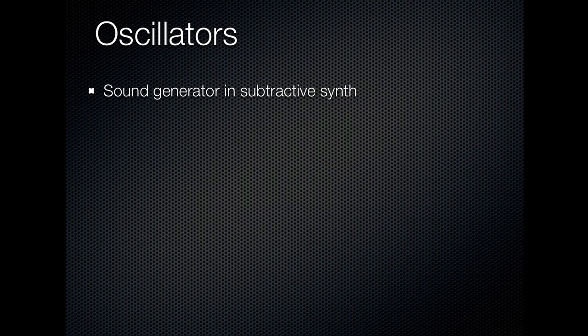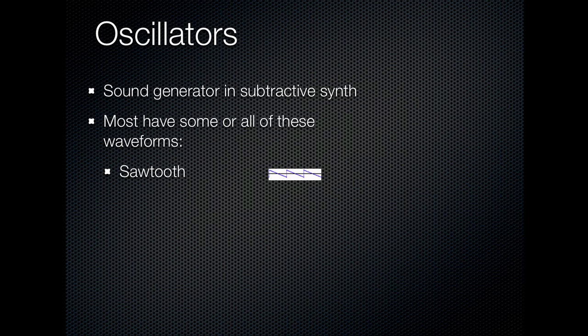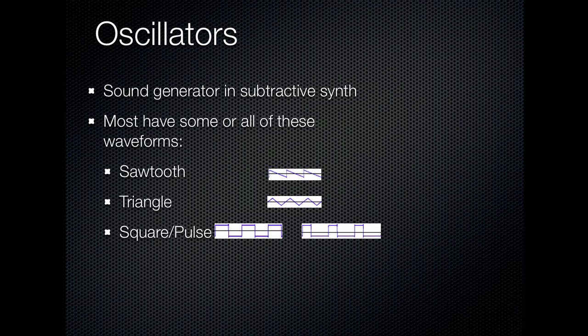Almost all analog synthesizers or digital analog-emulating synthesizers have some or all of these waveforms, and I'll play a little sample of each. There's the sawtooth wave, the triangle wave, the square wave, and similar but not quite exactly the same, the pulse wave, also called the rectangular wave. On some you've got a sine wave, but that's not too useful for a subtractive synth because that's only one partial and the filter has nothing to work with. Also, you can add various amounts of noise, such as white noise, to your sound to pass through the filter.